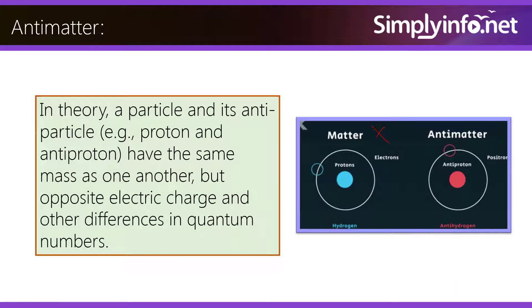In theory, a particle and its antiparticle, e.g. proton and antiproton, have the same mass as one another but opposite electric charge and other differences in quantum numbers.